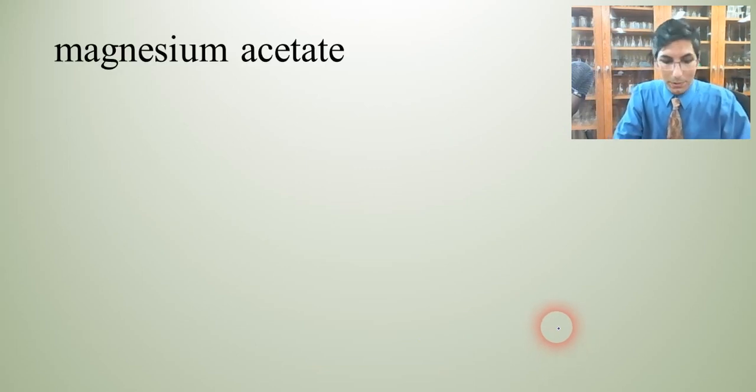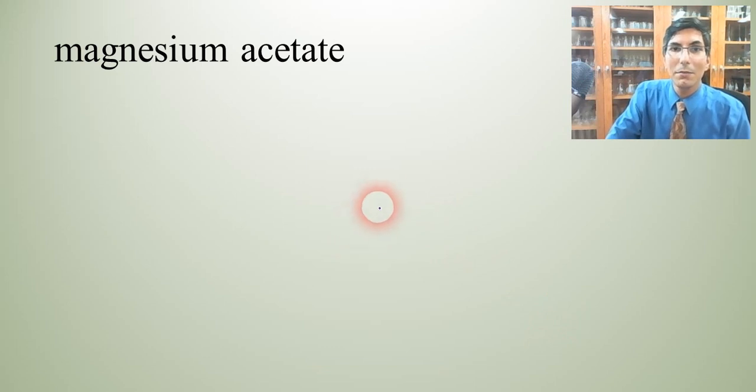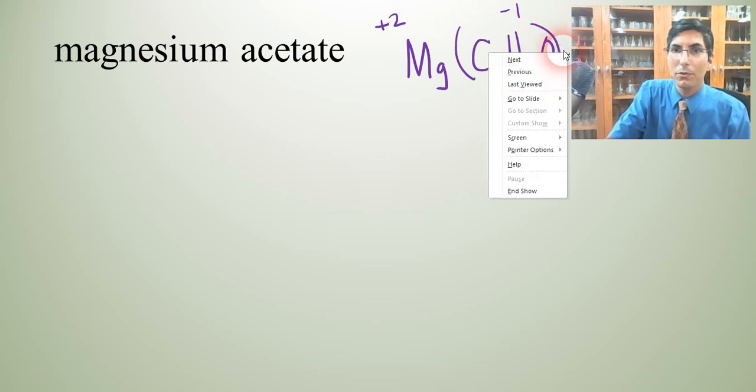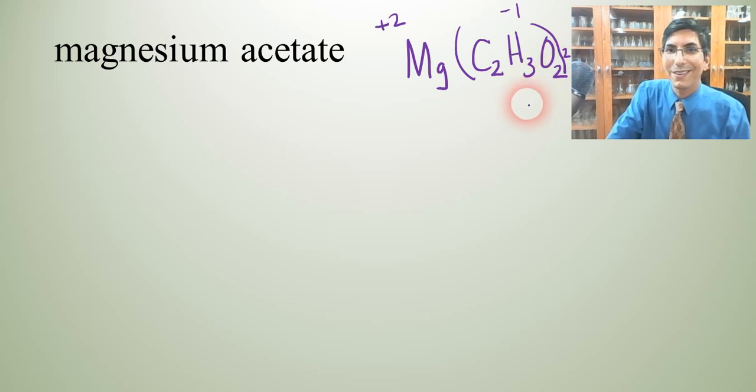Let's try a few more examples to finish up. Magnesium acetate. Magnesium is Mg with a positive 2 charge. And acetate is a polyatomic ion, C2H3O2 with a negative 1 charge. And we do have to swap those. They don't cancel. So parentheses and a 2.